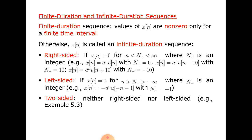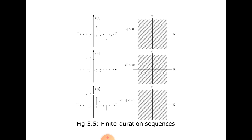In the case of a left-side sequence, x(n) equals zero for n greater than some value, with n going to minus infinity, where n is an integer. Example: x(n) equals minus a^n times u(-n-1) with n-minus equal to minus 1. A two-side sequence is neither a right-side nor a left-side sequence.